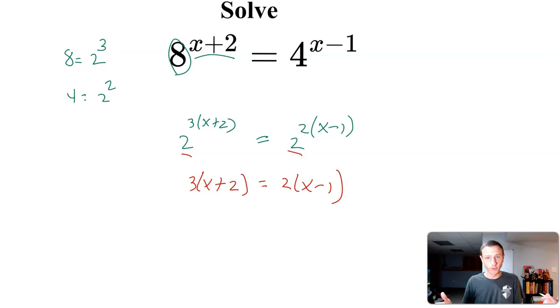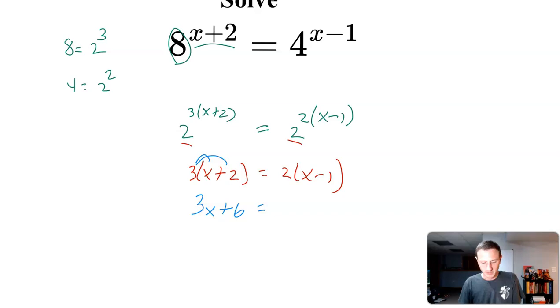And now we're just solving an equation. That's all we're doing from here—solving a multi-step equation. So I'm going to distribute the 3. I get 3x plus 6 equals... I'm going to distribute the 2: 2x minus 2.